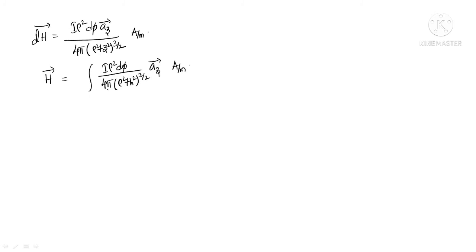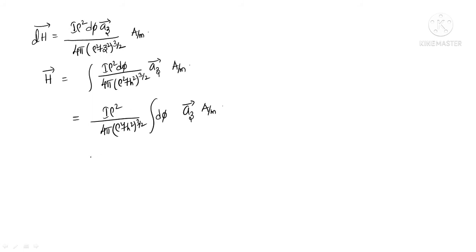All terms I, rho², 4 pi, and (rho² + h²)^(3/2) are constants, leaving only the integral of d phi. So H bar = I rho² / [4 pi (rho² + h²)^(3/2)] times the integral of d phi from 0 to 2 pi, which equals 2 pi. The field direction is along positive z, confirmed also by the right-hand thumb rule.